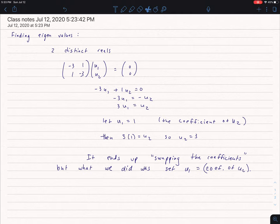Let's talk about the difference between finding those coefficients, those values of the eigenvector, when I have two distinct reals versus a repeated real.